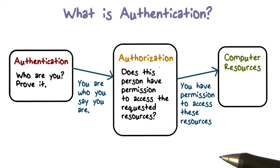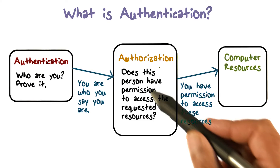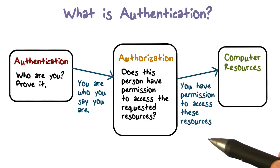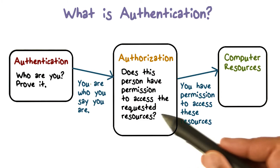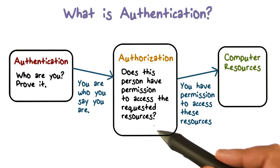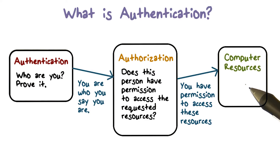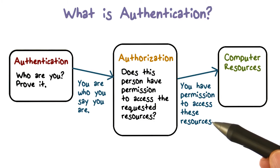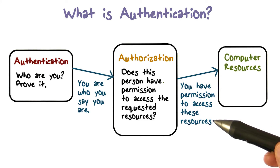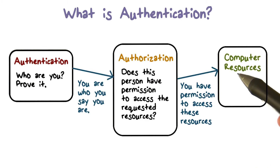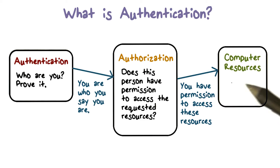Once we establish the source of a request and convince ourselves that the user is who he or she claims to be, the next part is authorization. In authorization, we are establishing whether the source of the request has the permissions necessary for the resource they want to access. This permission check is the authorization process. Once authentication and authorization are done, we allow access to the resource when permitted, and the source of the request is able to make use of the resources.